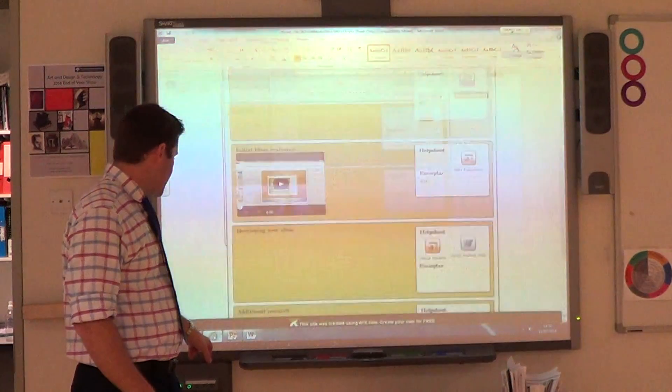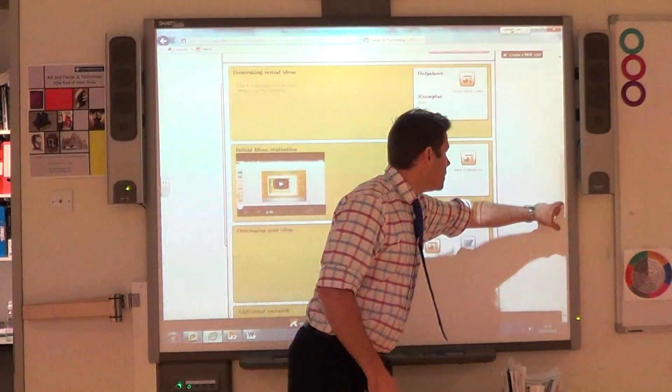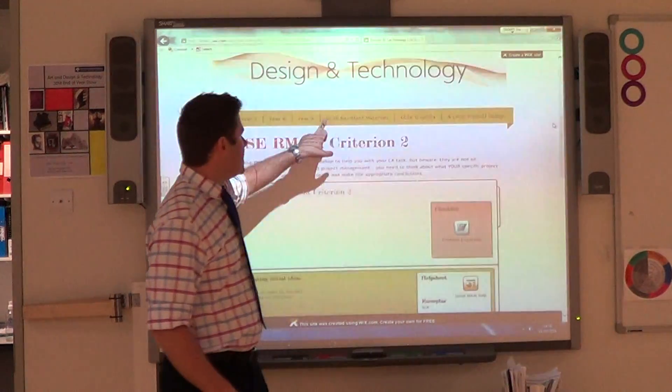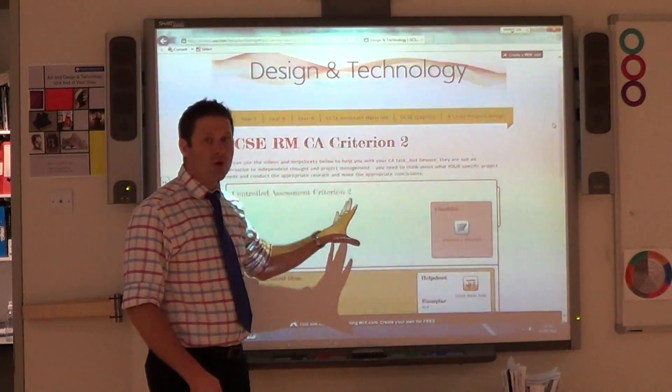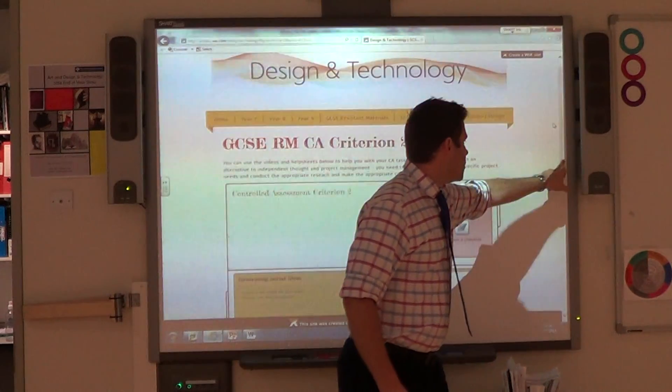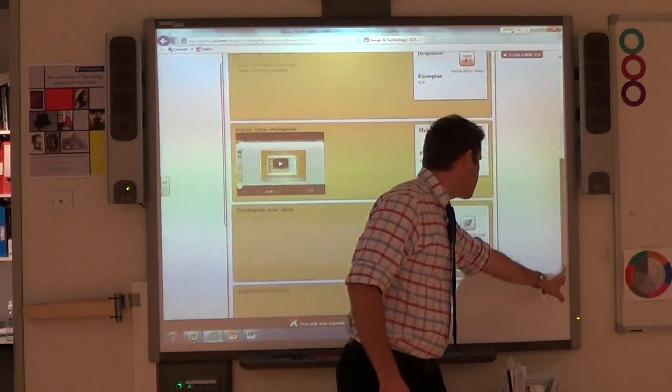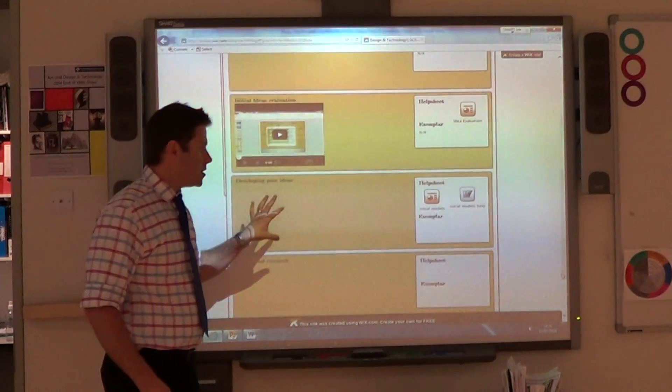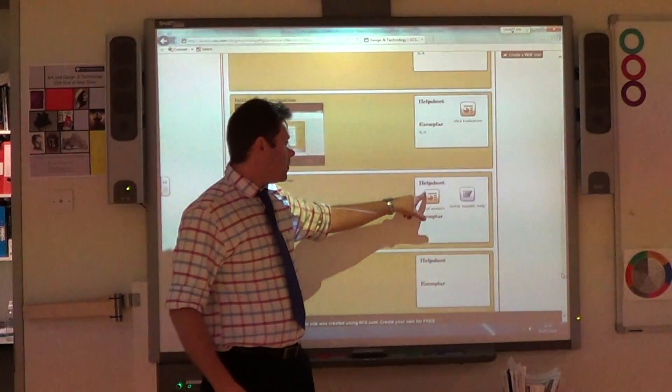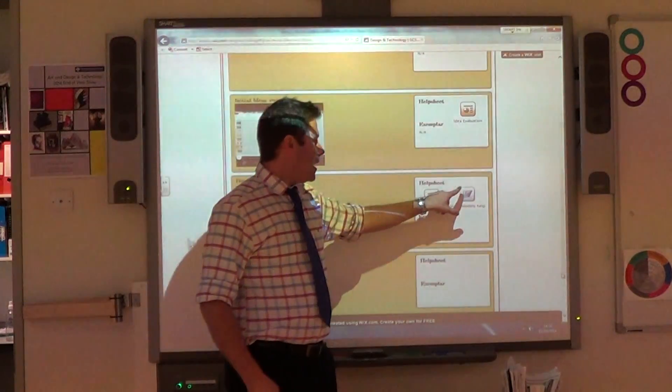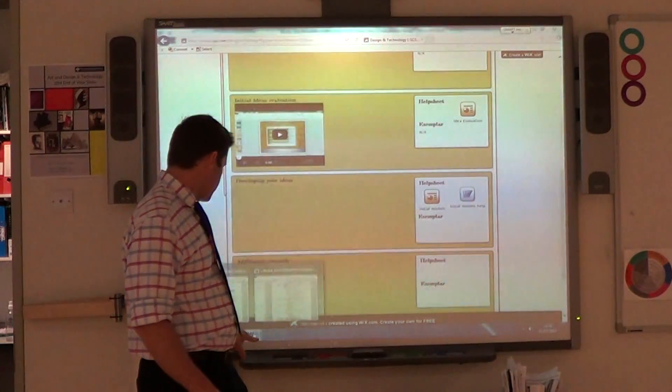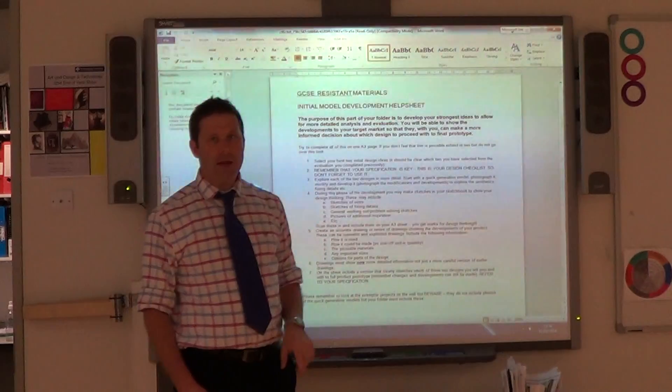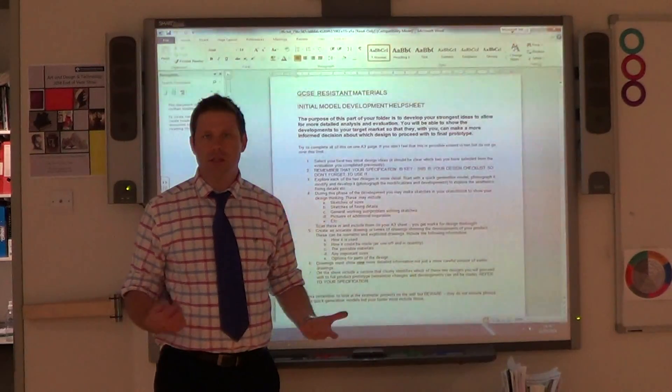So if you look onto the design technology website, so we're on D&T, GCSE resistance materials and we're on Criterion 2 and you scroll down and you'll see two videos here when you come to this part of the website. There's the PowerPoint that I went to on the first video and there is a Word document which is this thing here. And this tells you the detail of the kind of things you need to include.